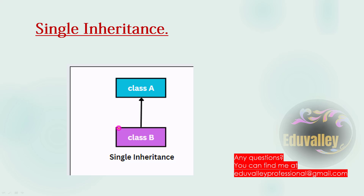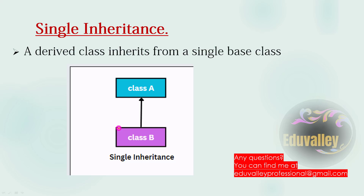We are going to look at Single inheritance. We want to say single inheritance — one class is derived from one class. This class is derived from the base or parent class. This is a single inheritance — one class inherits from one class.